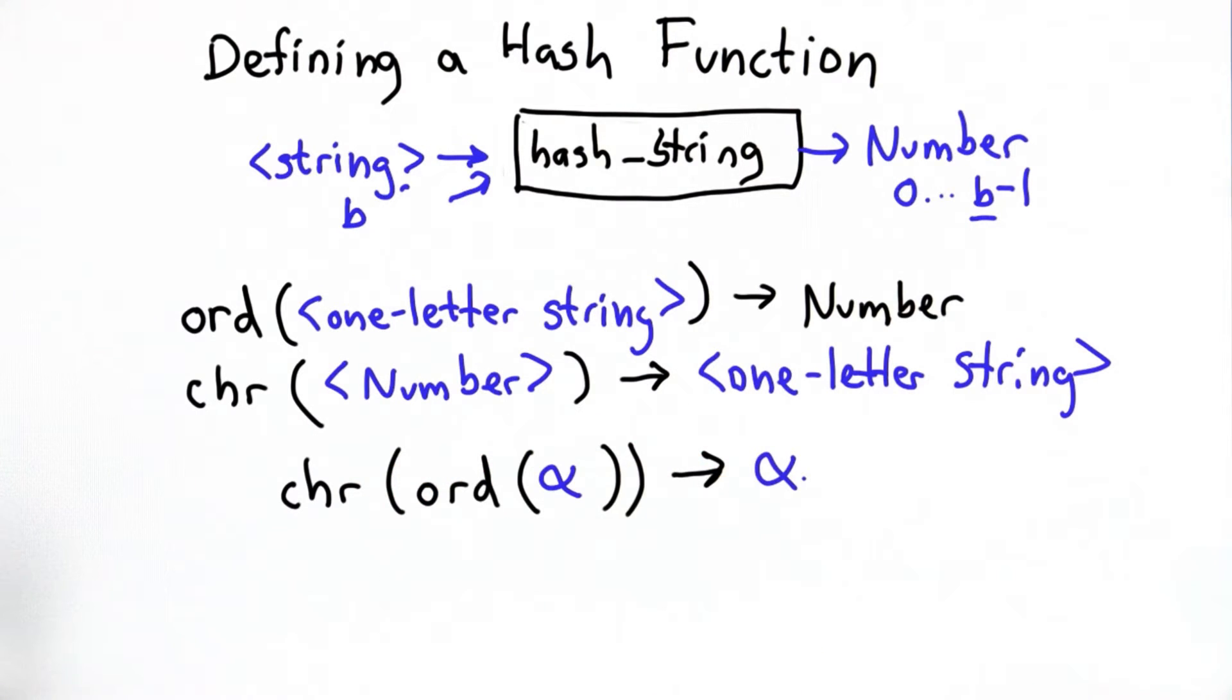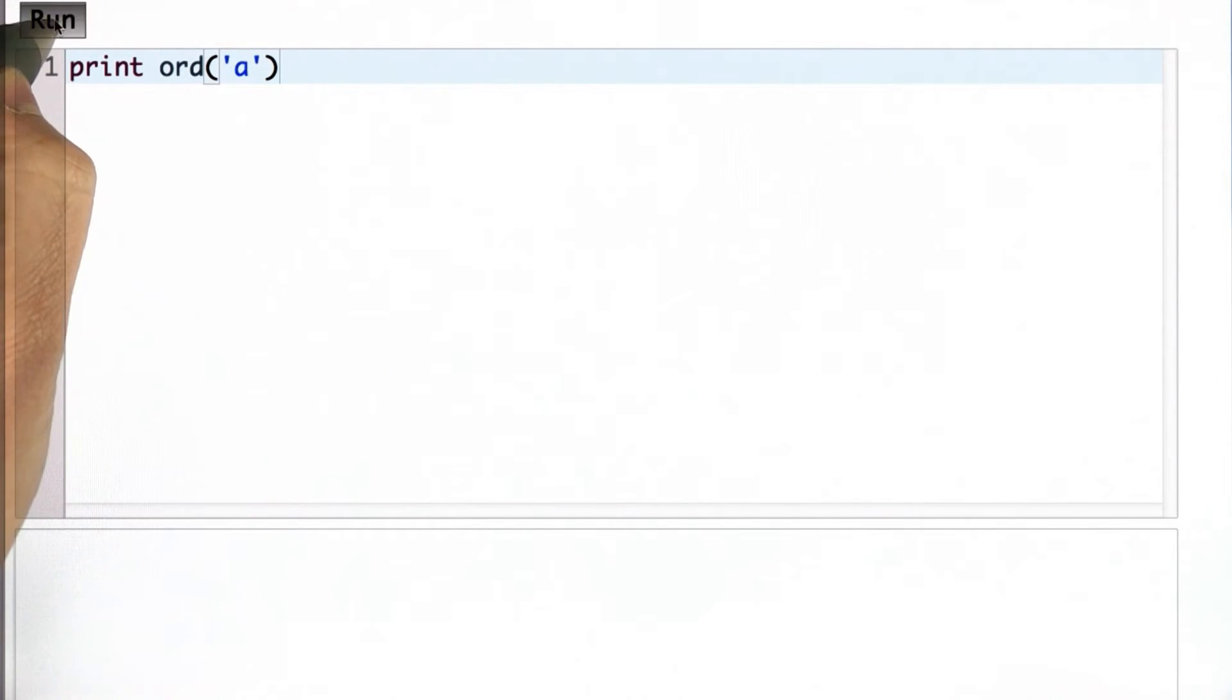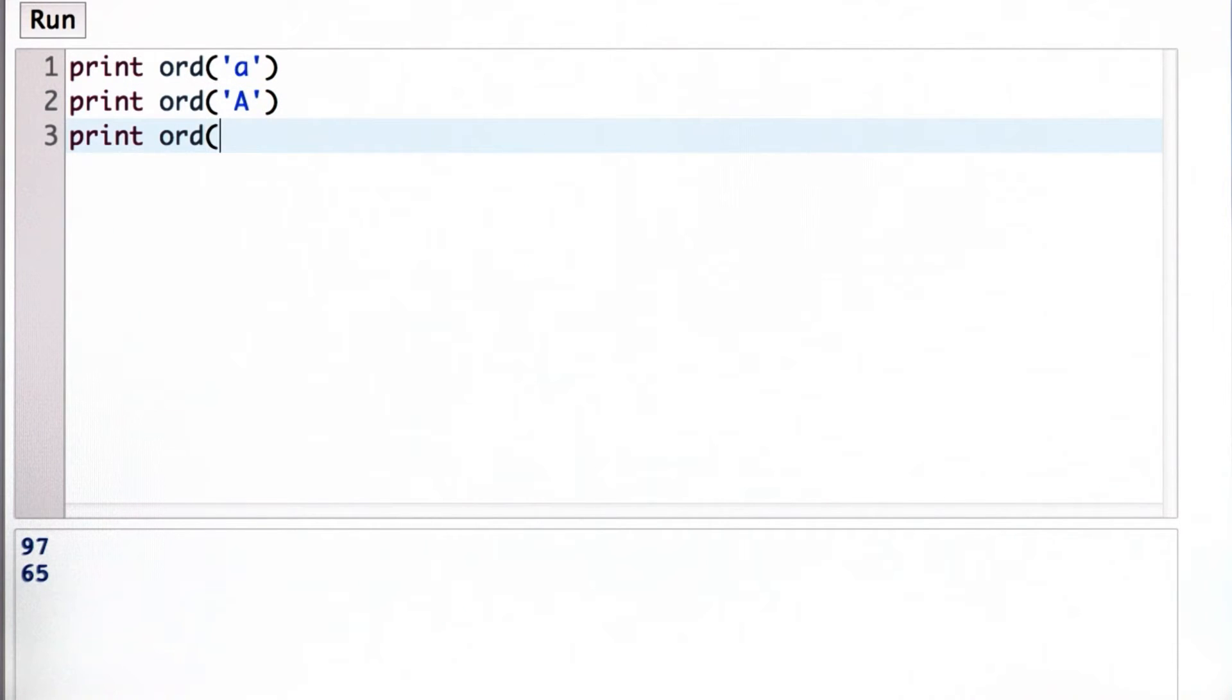So let's try a few examples in the Python interpreter to see how ord and chr work. So we'll print ord of a, and when we run that, we see we get the number 97. If we try print ord of capital A, that's different. We get 65. And if we print ord of B, we get 66.